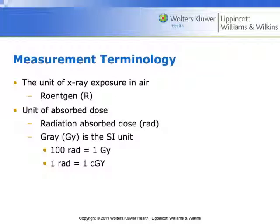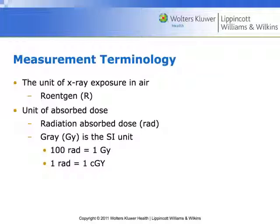For absorbed dose, the unit is the gray — this would be gray in tissue, often expressed in milligray. In the CT dose range, we're dealing with milligray. The conversion factors from traditional to SI units: 100 rad equals 1 gray, and 1 rad equals 1 centigray. Most of where CT is at now deals with SI units.